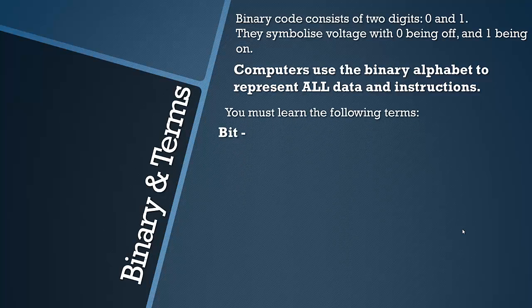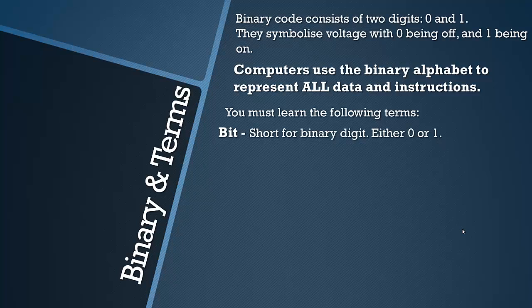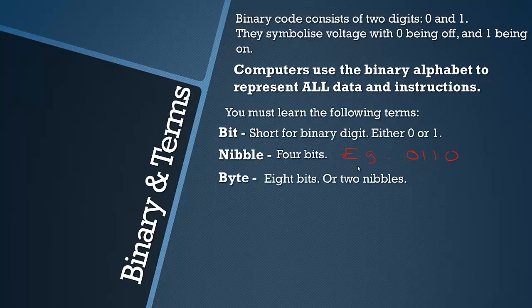You need to learn the following terms. A bit is short for binary digit, either zero or one. A nibble is four bits. The term nibble isn't used that often, but an example would be 0110, which incidentally would be six in binary. A byte is eight bits or two nibbles. An example would be 0110 space 1100. Usually you leave a space in between the two nibbles in a byte just because it's easier to read and understand.